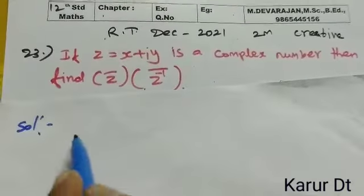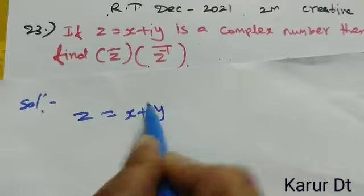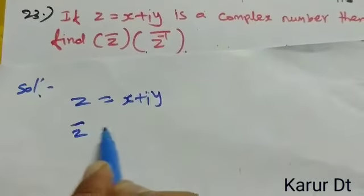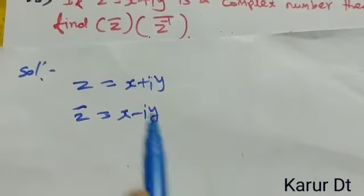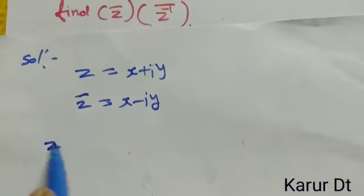Solution: Z equals X plus i y. Z bar is X minus i y. This is the sign. Let's say given.